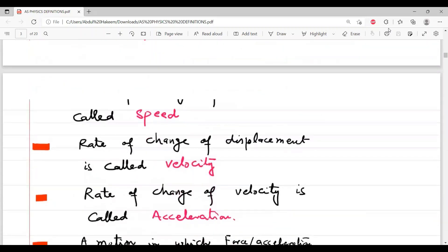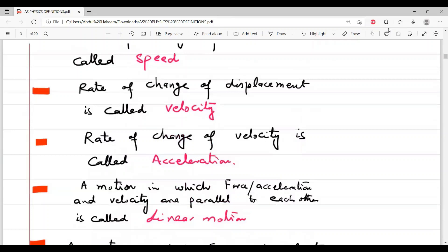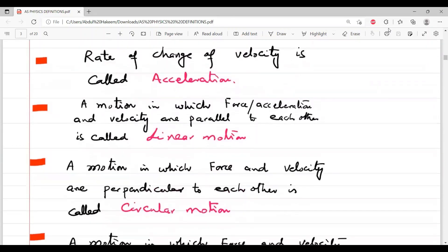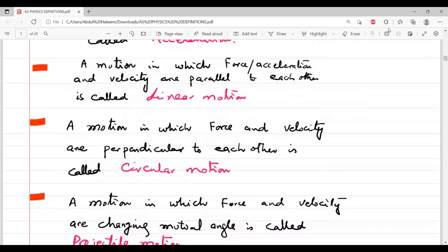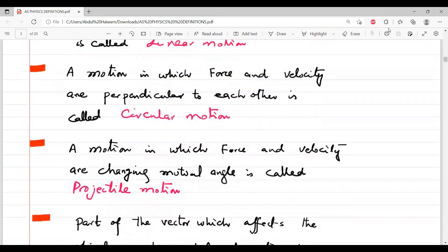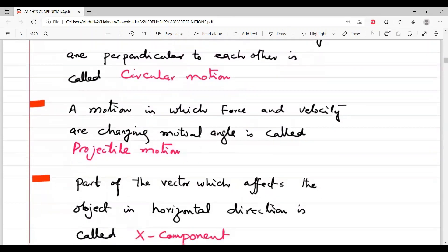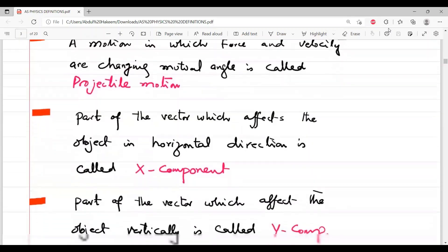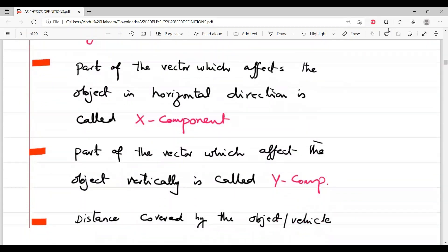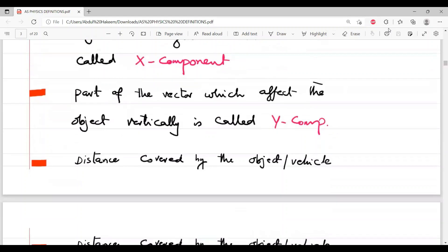Now for the second chapter: speed, velocity, acceleration, linear motion, circular motion, projectile motion, x component of the vector, y component of the vector.